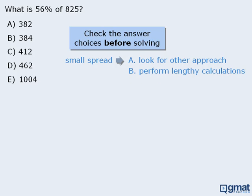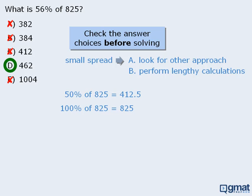Can you see a faster approach? Well, notice that it's relatively easy to see that 50% of 825 is 412.5, and since we want to find 56% of 825, we know that the correct answer must be greater than 412.5, which means we can eliminate answer choices A, B, and C. Also, since 100% of 825 is 825, we know that the correct answer must be less than 825, which means we can eliminate answer choice E. So we can see that the correct answer here must be D, and we didn't have to perform any lengthy calculations at all.